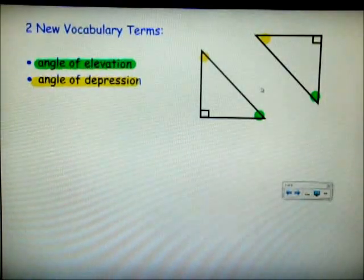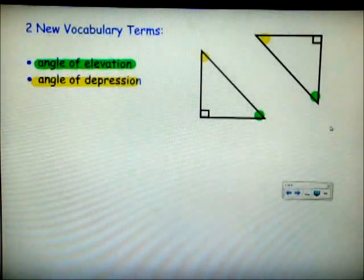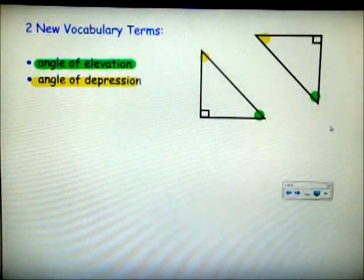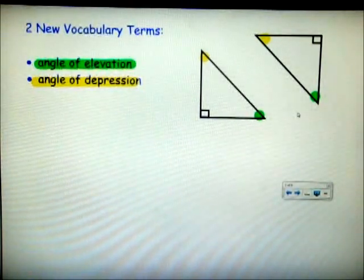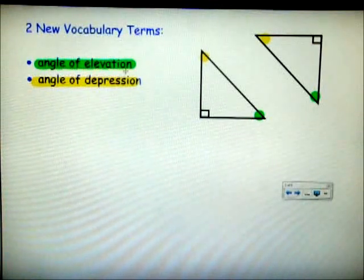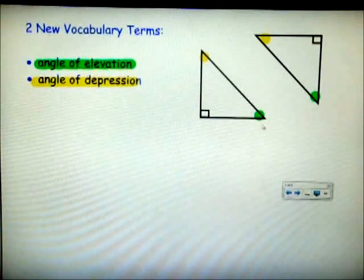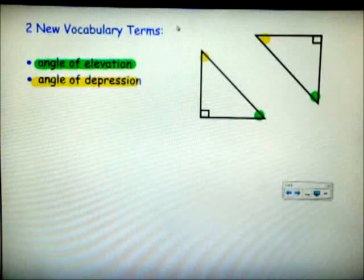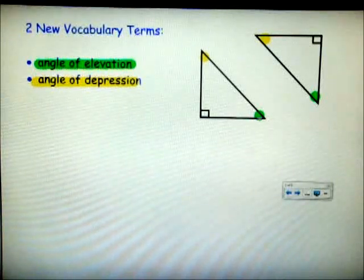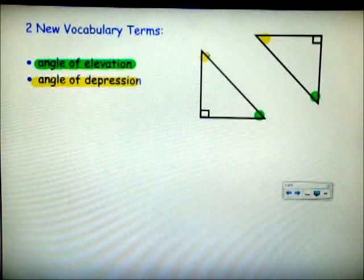There's two new vocabulary terms I wanted to show you. We have the angle of elevation and the angle of depression. I have them color-coded in the picture here. The angle of elevation is going to be where somebody would stand and look up to see something. That's why the green shaded angles here are the angle of elevation. An angle of depression is where you might be when you're looking down at an object.